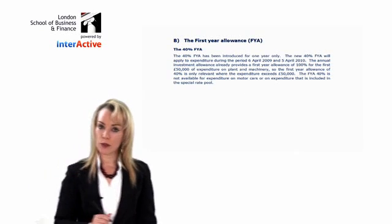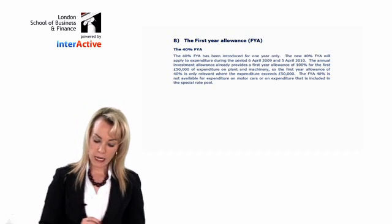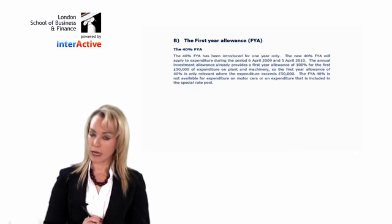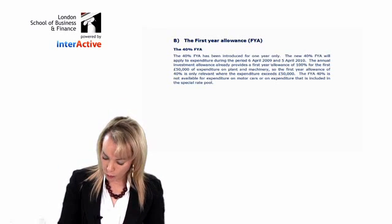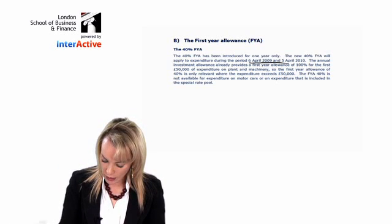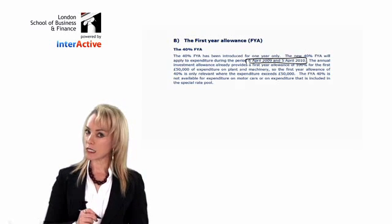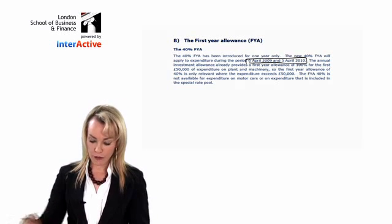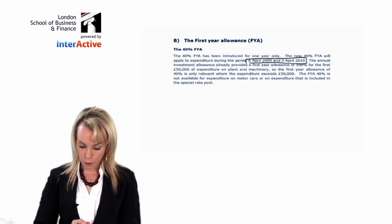The first year allowance, there are two first year allowances. The first one is called the 40% first year allowance. I talk about that being like a special offer. And you can only get that if you buy your plant and machinery during a special offer period, between the 6th of April 09 and the 5th of April 10.